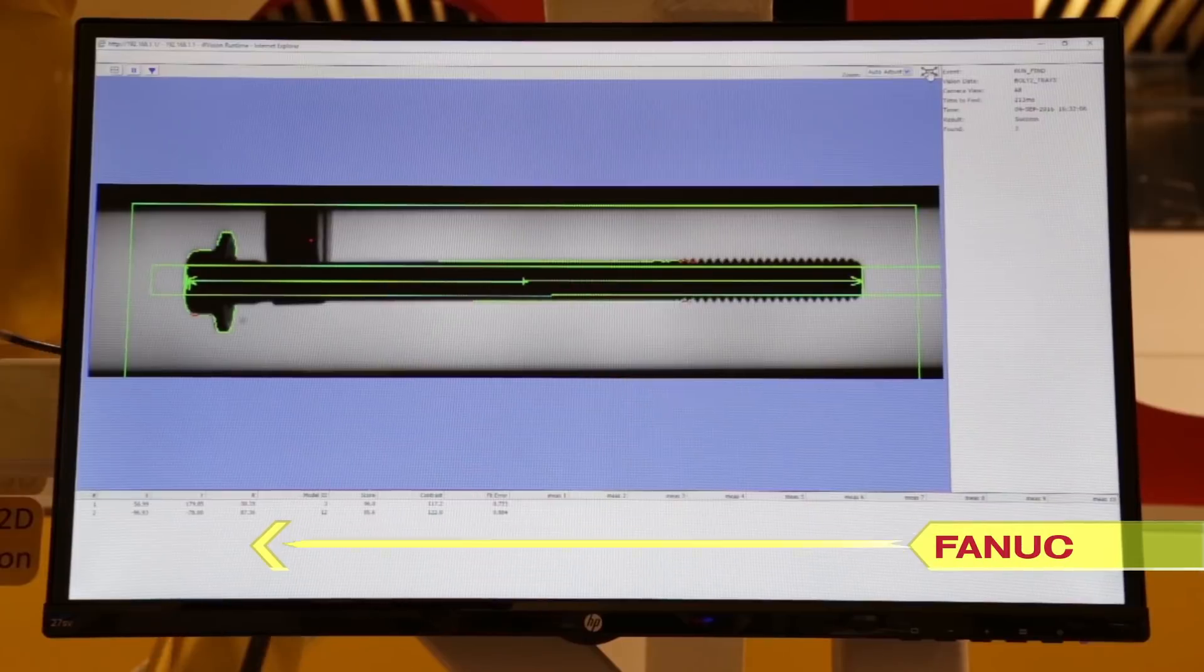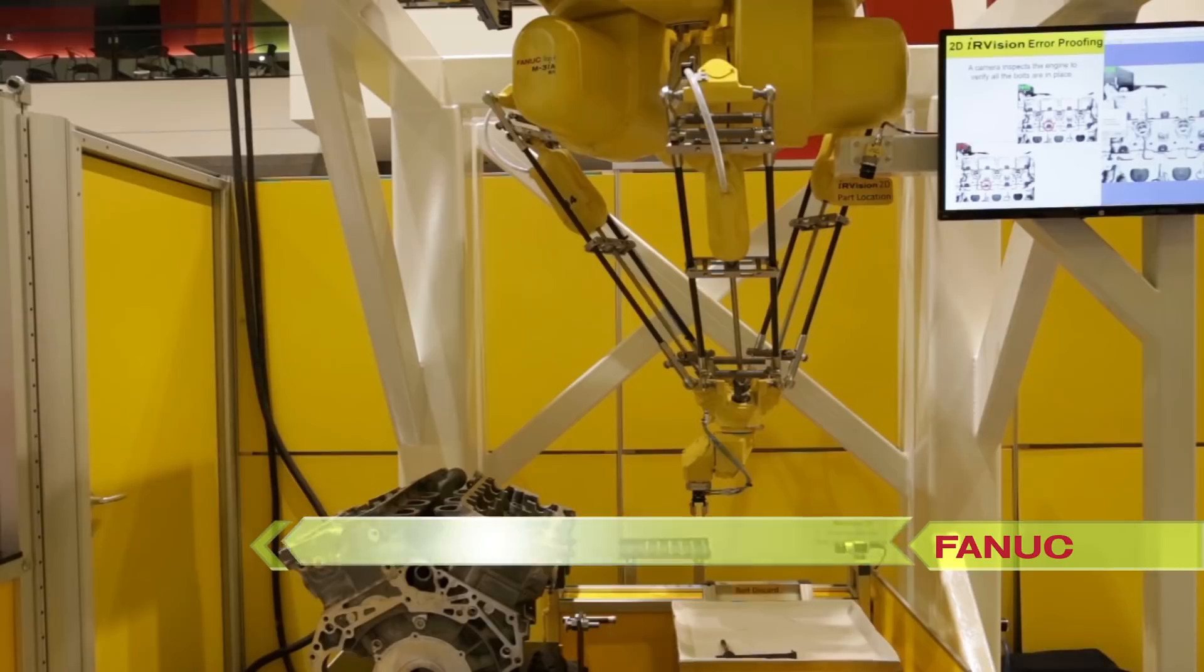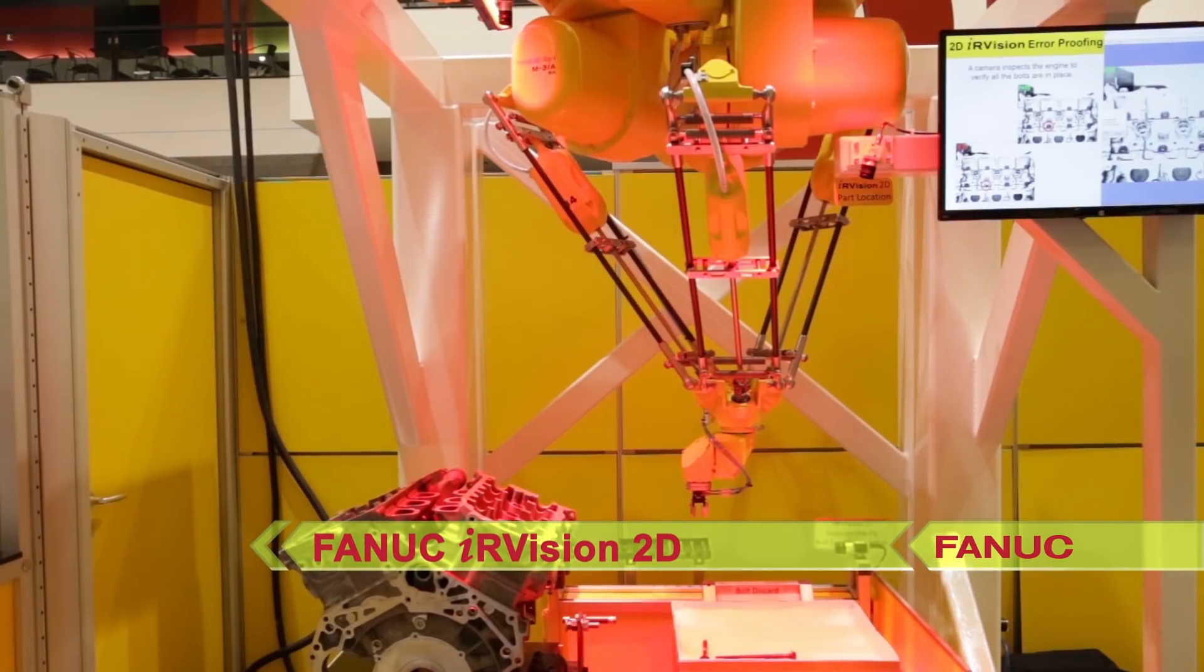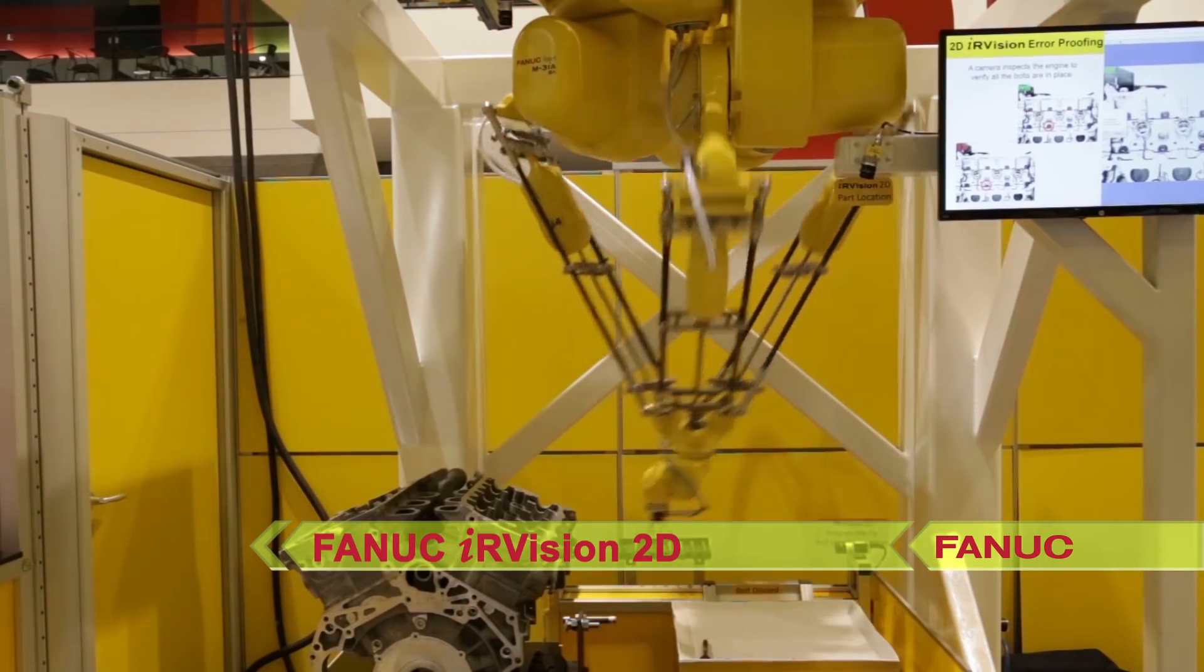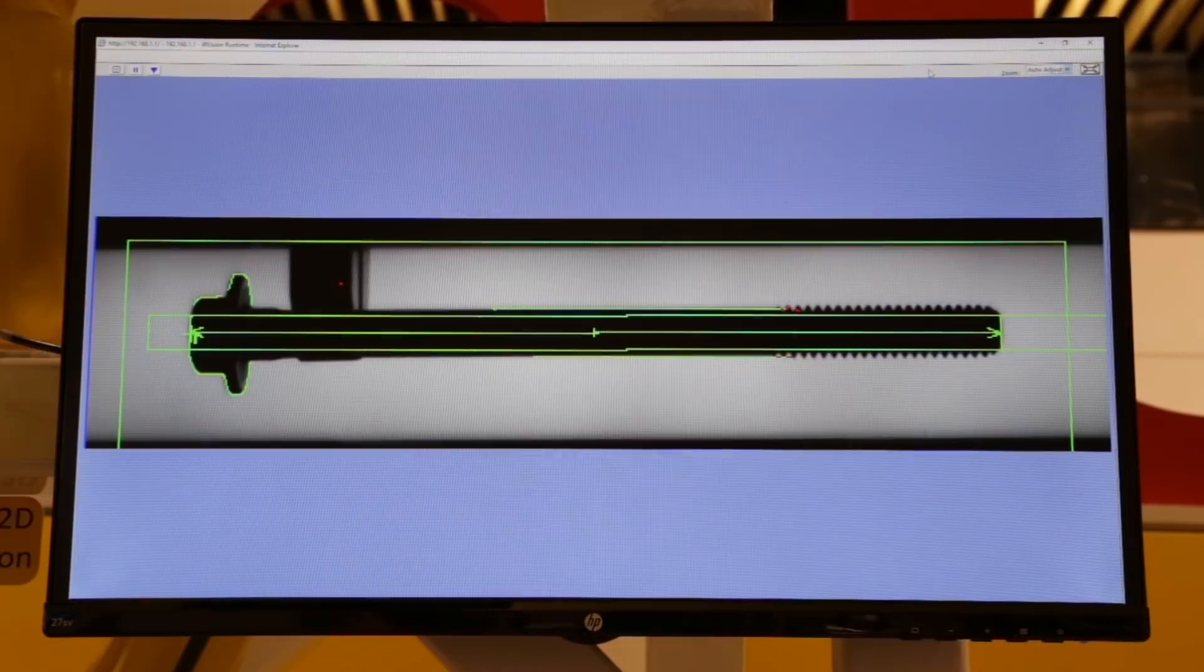It accomplishes this through the use of IR Vision 2D, FANUC's intelligent robot vision feature that allows the robot to see the bolts on the tray, then check bolt length on the fly before placing them onto a rack.